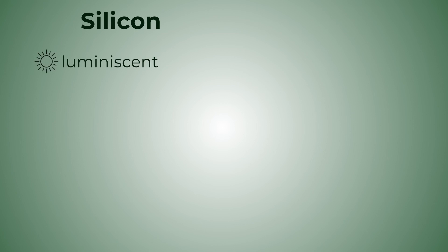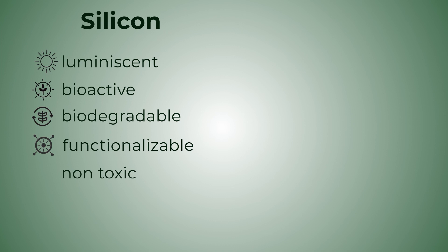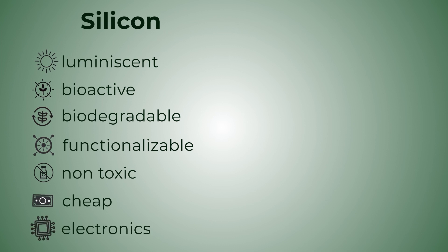Once silicon has been treated to form these nanopores, it can give properties such as luminescence — that is, produce light based on an electric current — biodegradation, and it has the ability to host other elements in those pores and therefore give it a different functionality. It can also be used as a sensor, it is not toxic, it has an affordable price, and it is already one of the most ubiquitous materials in electronics, so it would not be very difficult to implement its new applications in existing devices.